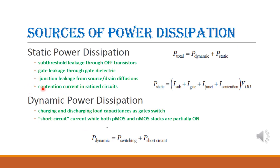The equation for static power dissipation: P_static equals sub-threshold leakage current plus gate leakage current plus junction leakage current plus contention current, all multiplied by VDD. Dynamic power dissipation is given by P_dynamic equal to switching power plus short circuit power. The total power dissipation is dynamic power dissipation plus static power dissipation.